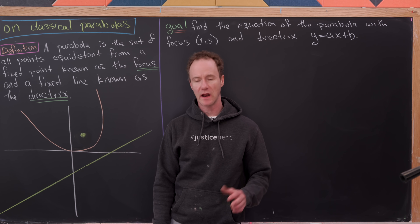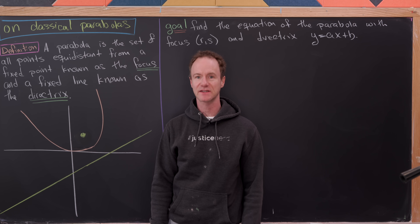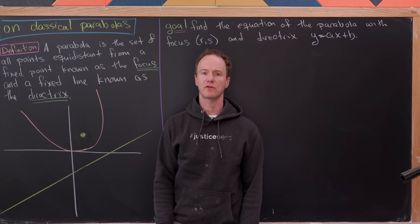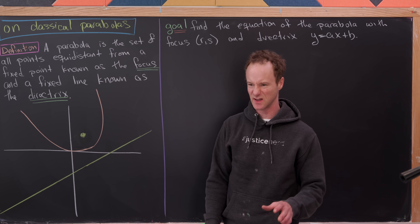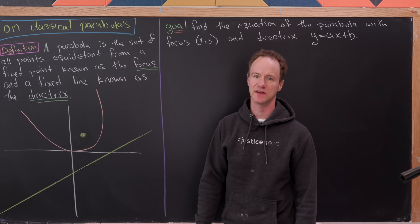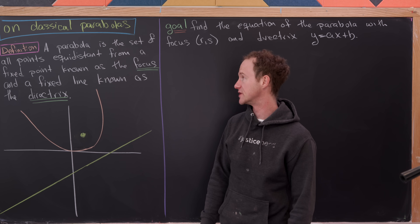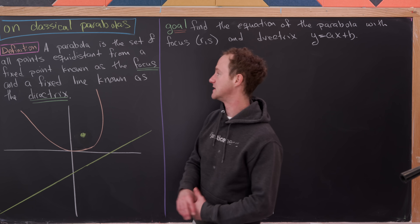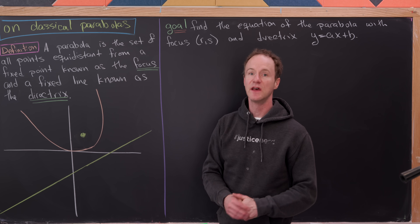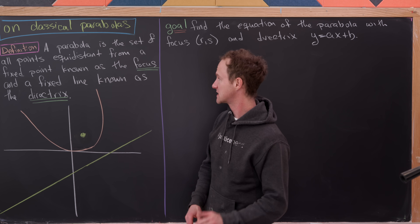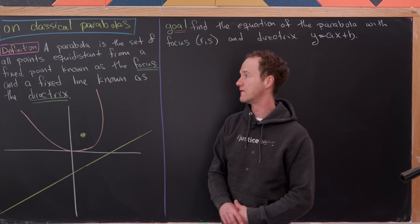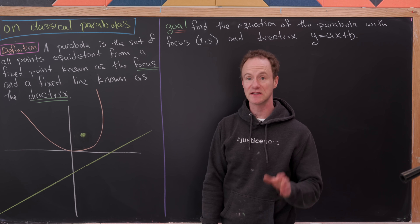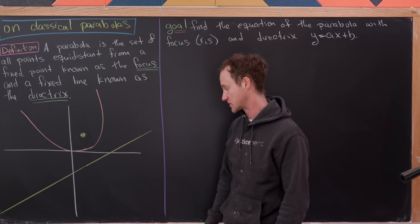Today I'd like to patch together what I'll call the classical definition of the parabola with the way that we generally view it today as a set of points satisfying some sort of equation. Classically, a parabola is defined to be the set of all points that are equidistant from a fixed point, known as the focus, and a fixed line, known as the directrix.